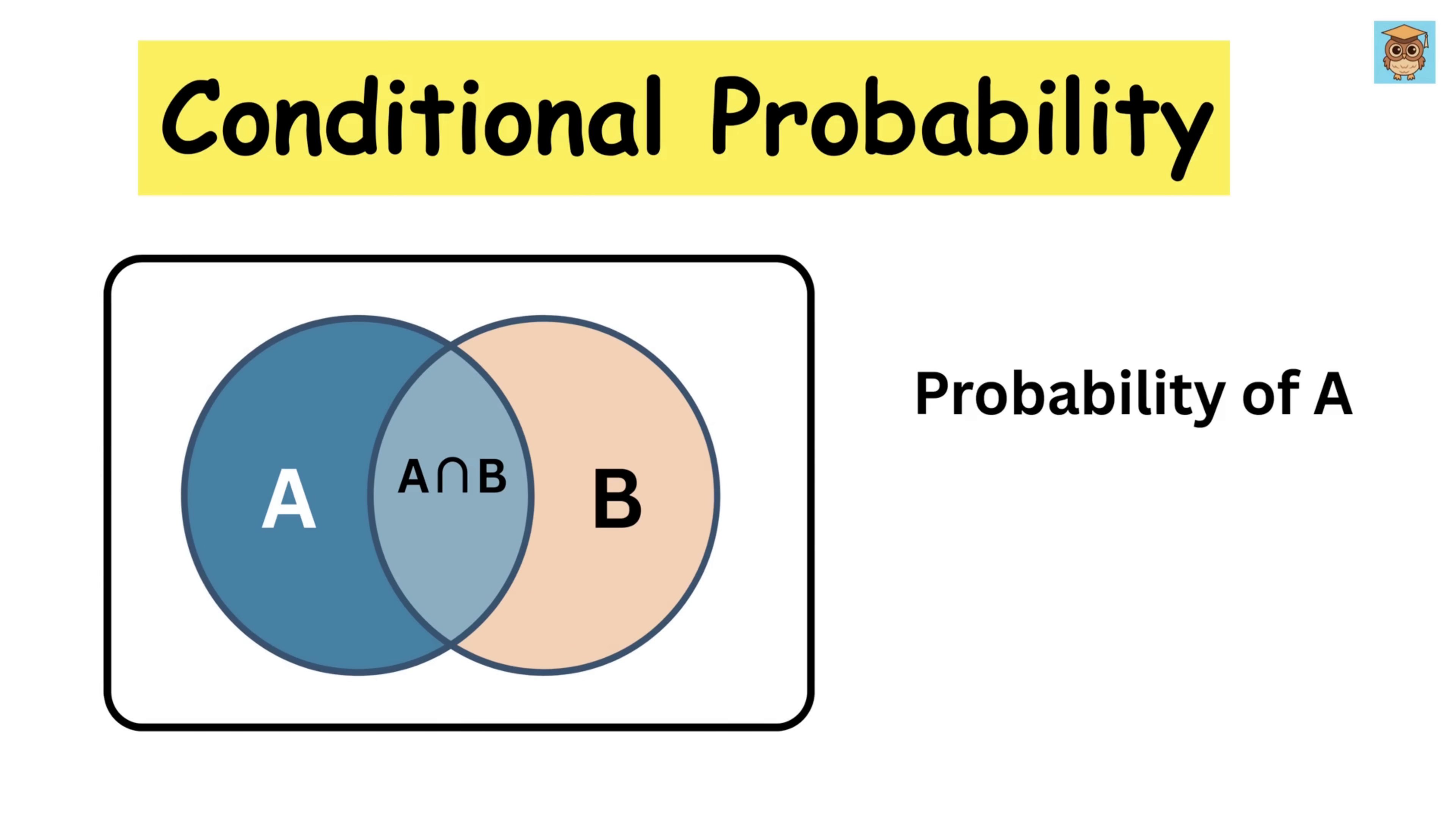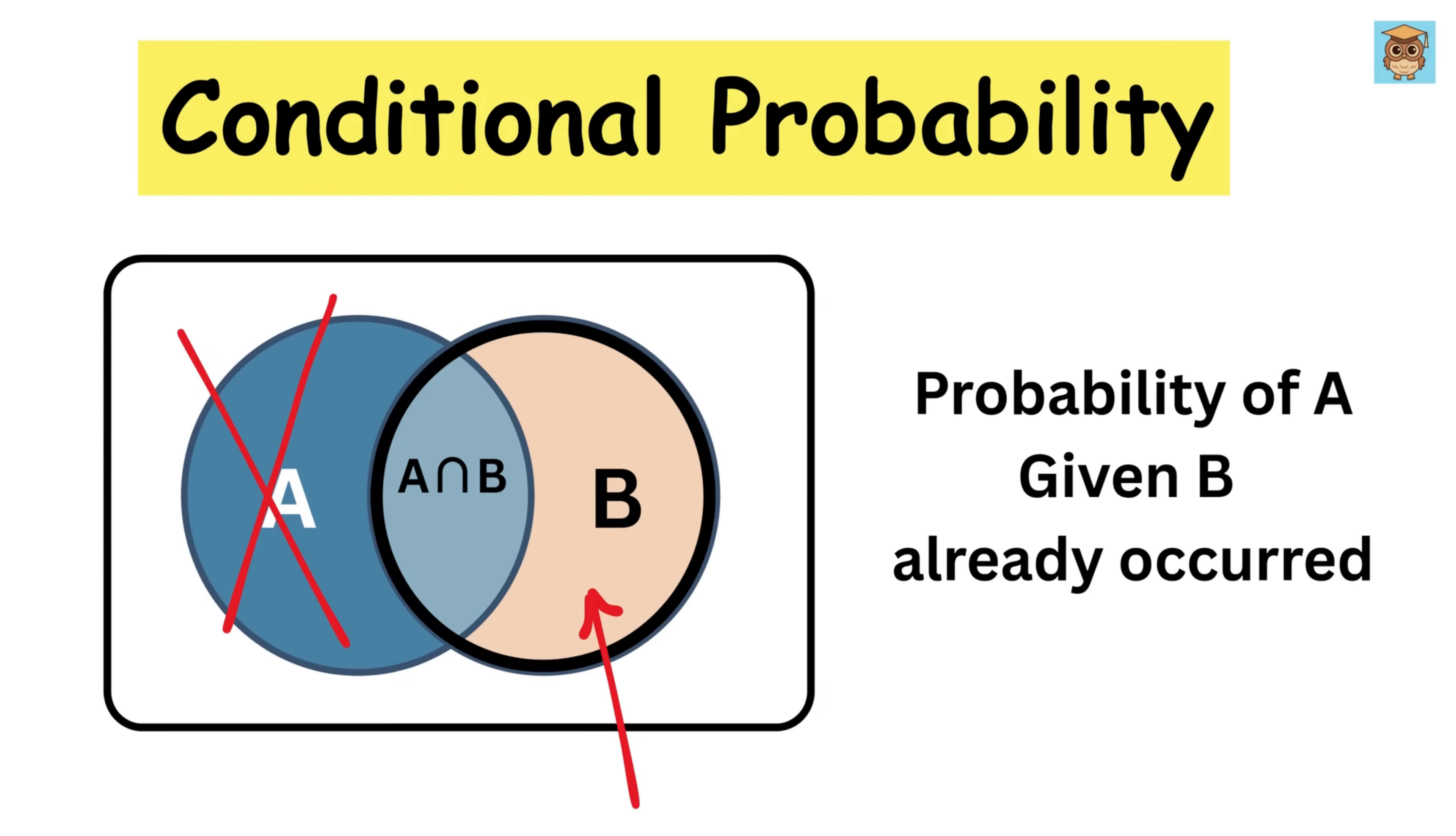Suppose you want to find the chance of some event A happening, but you already know that another event B has happened. This means we are focusing only on the B circle. And inside that circle, the overlapping area is the part that also has A. So the probability of A given B is just asking, out of everything in the B circle, how much is also in A? That's exactly what conditional probability means.